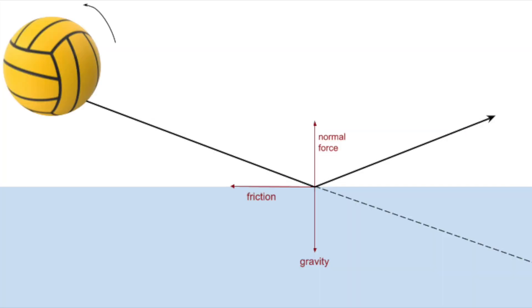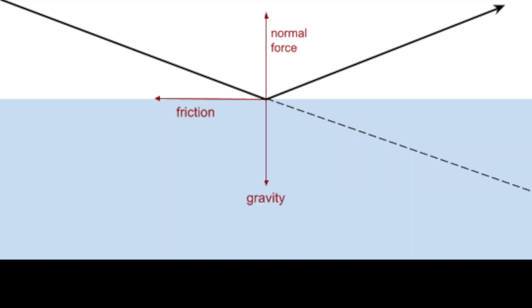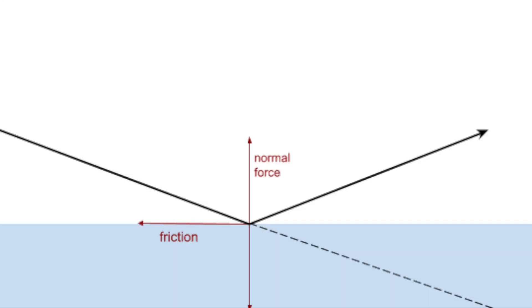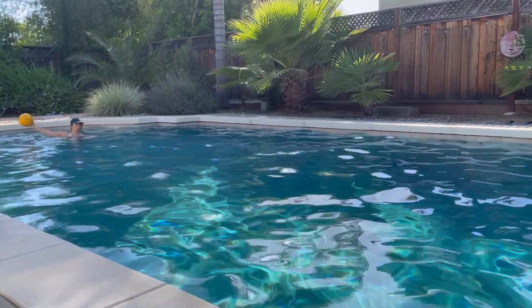In this diagram, we can see the forces that act on the ball as it skips on the water. Firstly, the gravitational force pulls the ball downwards to hit the water, while the normal force, along with the backspin implemented on the ball at its release, causes it to be pushed back up.